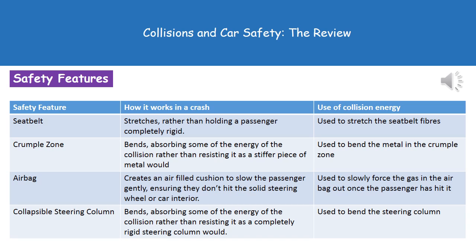The second safety feature is the crumple zone. This is the region generally found at the front of the car that's specifically designed in a collision to actually crumple in — it's designed to collapse. As the car impacts with another surface, the crumple zone bends and absorbs some of the energy of that collision. All of the collision energy is used to bend the metal in the crumple zone.